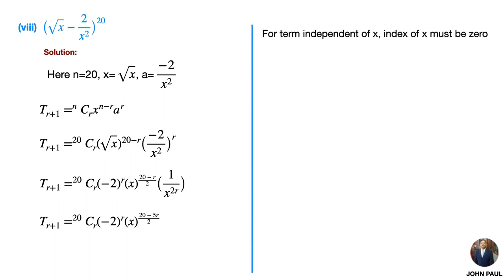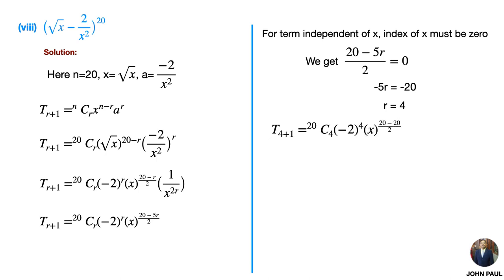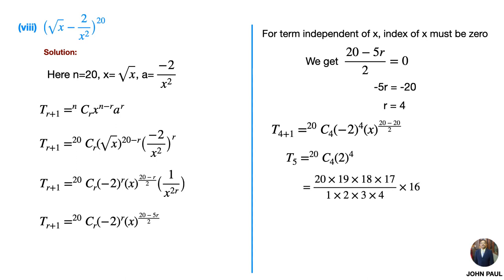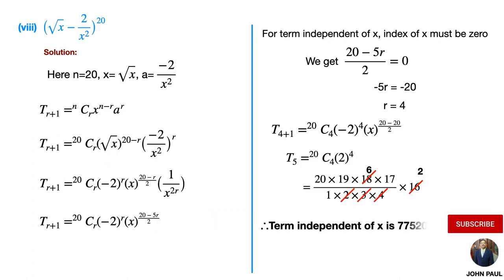For the term independent of x, the index of x must be 0, therefore (20 − 5r)/2 = 0. By simplifying we get r = 4. Substituting r = 4, we get 20C4 · (−2)^4 · x^((20−20)/2). Therefore T5 = 20C4 · 2⁴. By cancelling possible terms, the term independent of x is 77520.